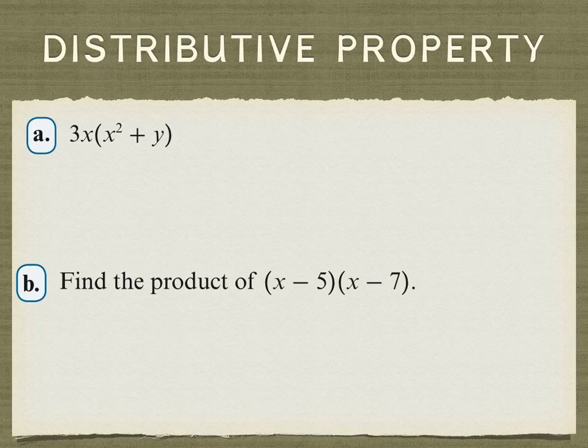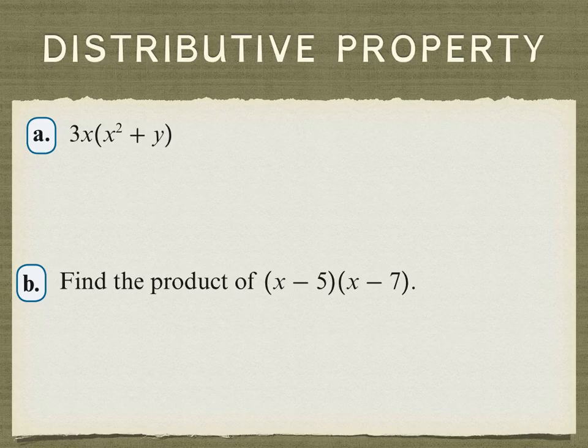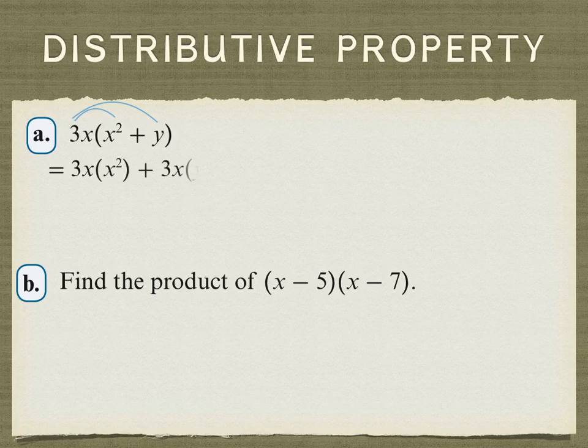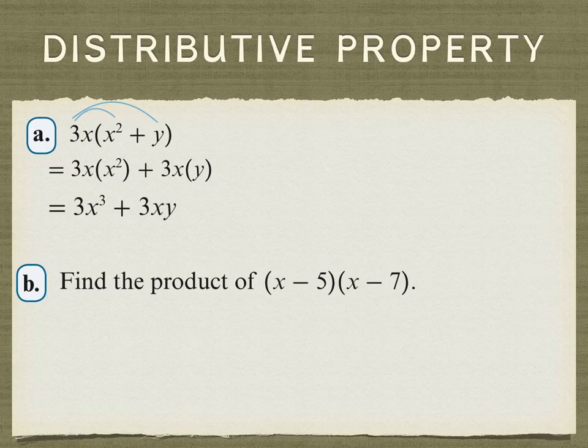To multiply the monomial 3x times the binomial x squared plus y, we can distribute the 3x to both terms. And then we can simplify and it becomes 3x to the third power plus 3xy.